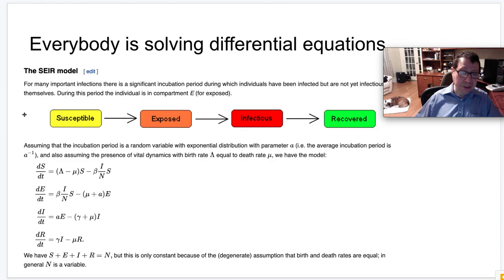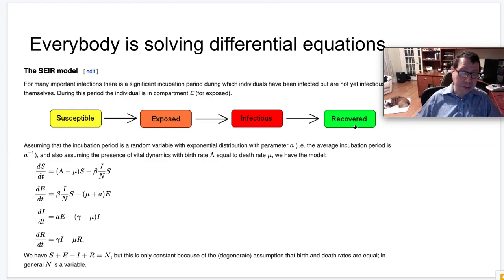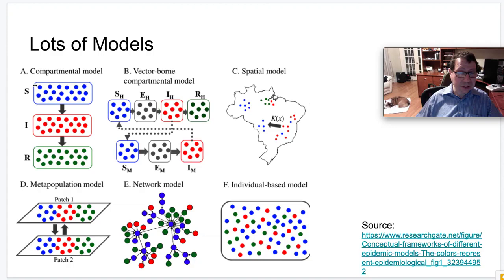Lots of people are solving differential equations right now to model the pandemic. There are so-called compartmental models — this is straight from the Wikipedia article — and we're going to see them in this class. In these relatively simple models, we divide the population into those that are susceptible, those that have been exposed but not yet infectious, those that are actually infectious, and finally those that have recovered or been removed — perhaps no longer infectious or, sadly, passed away. There's a differential equation modeling this; at the beginning it tends to grow exponentially, then becomes self-limiting and goes down.